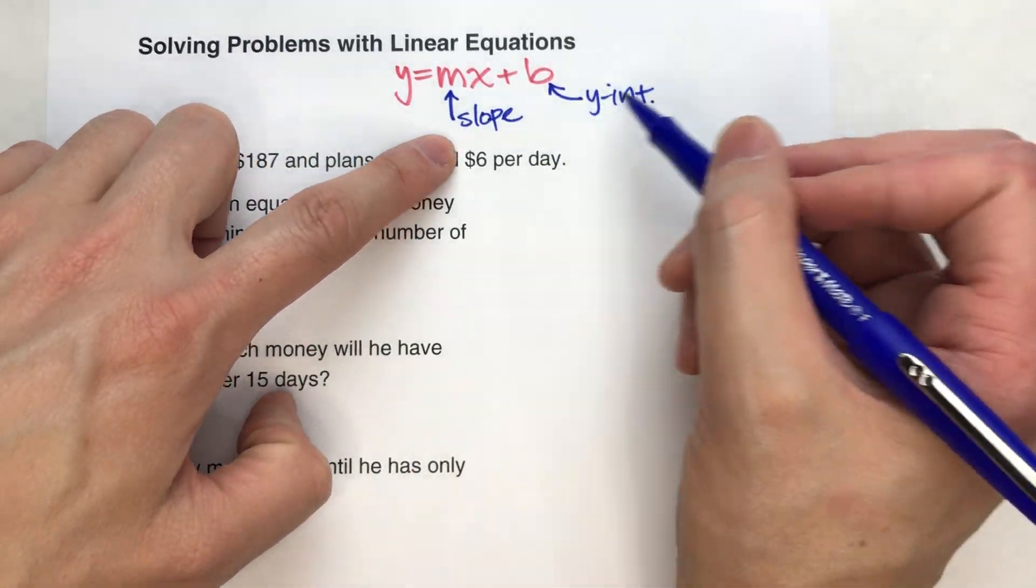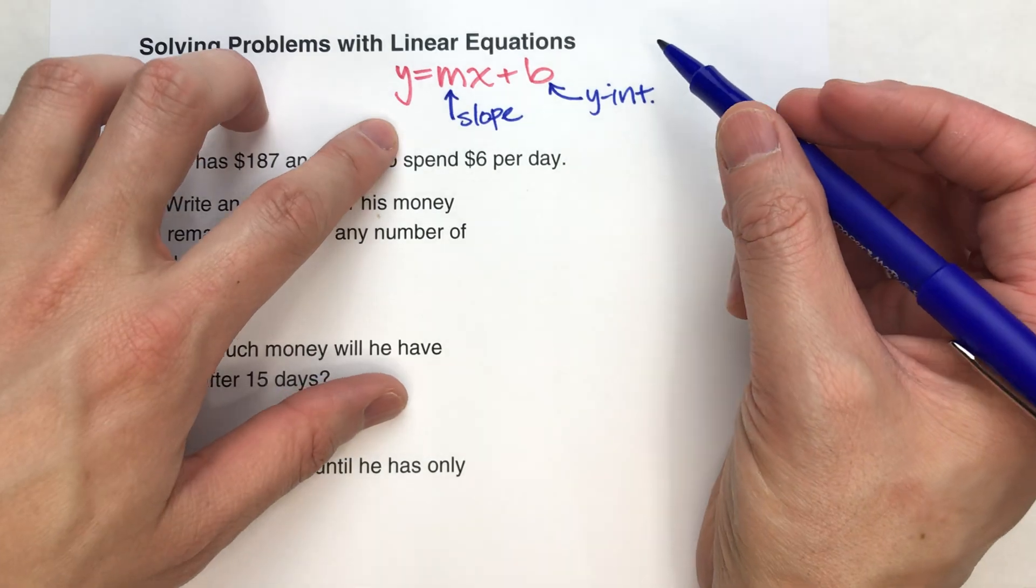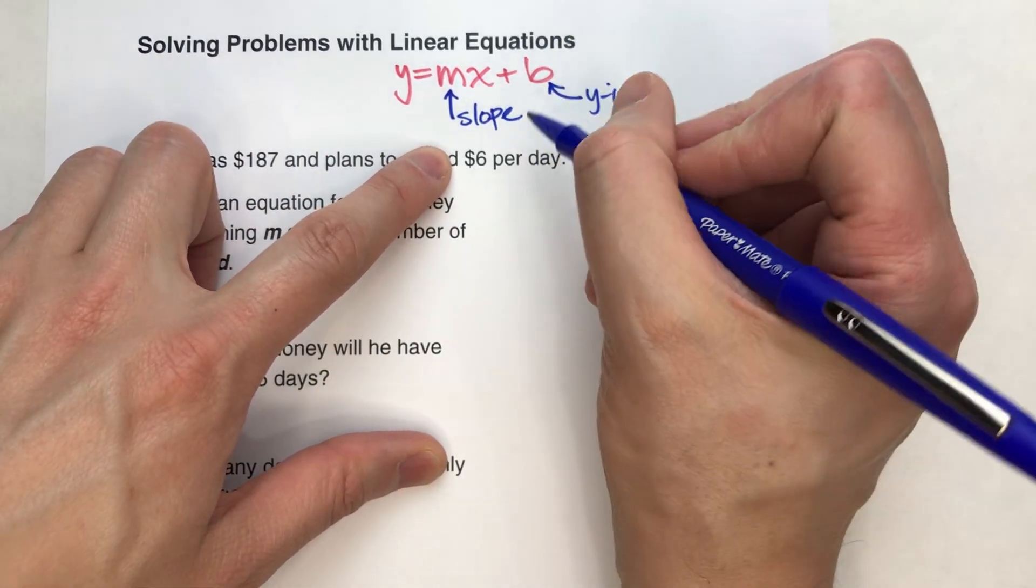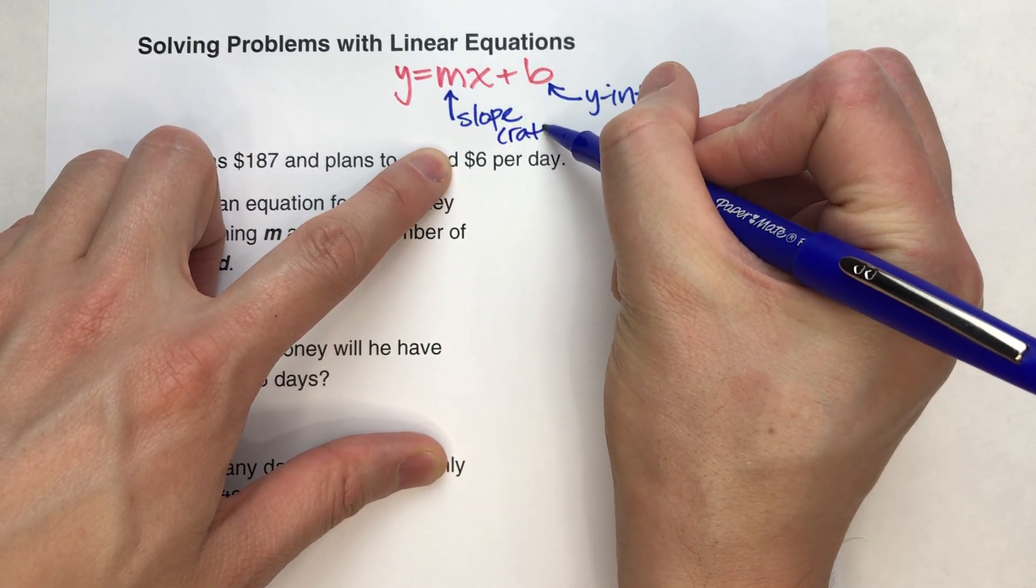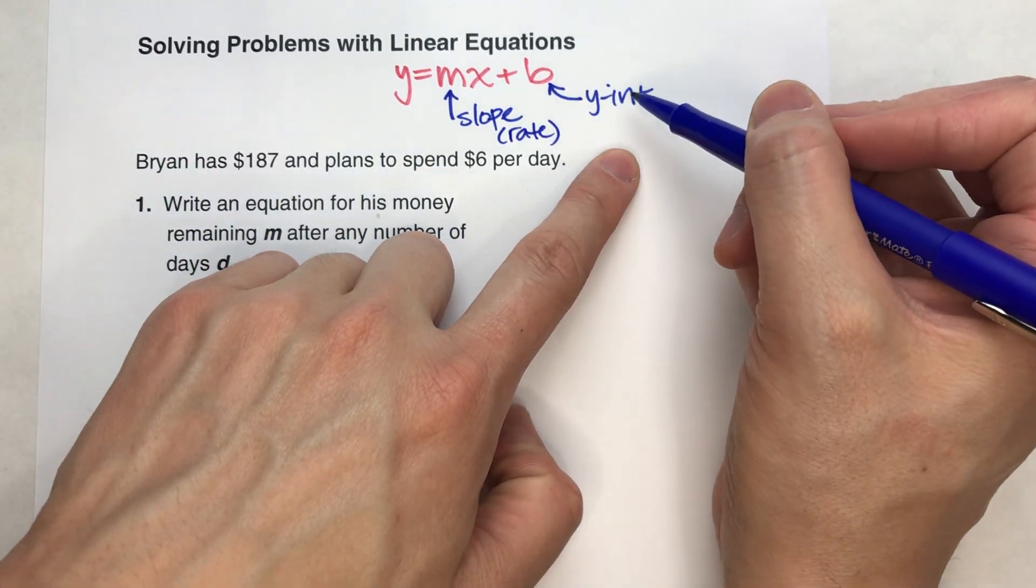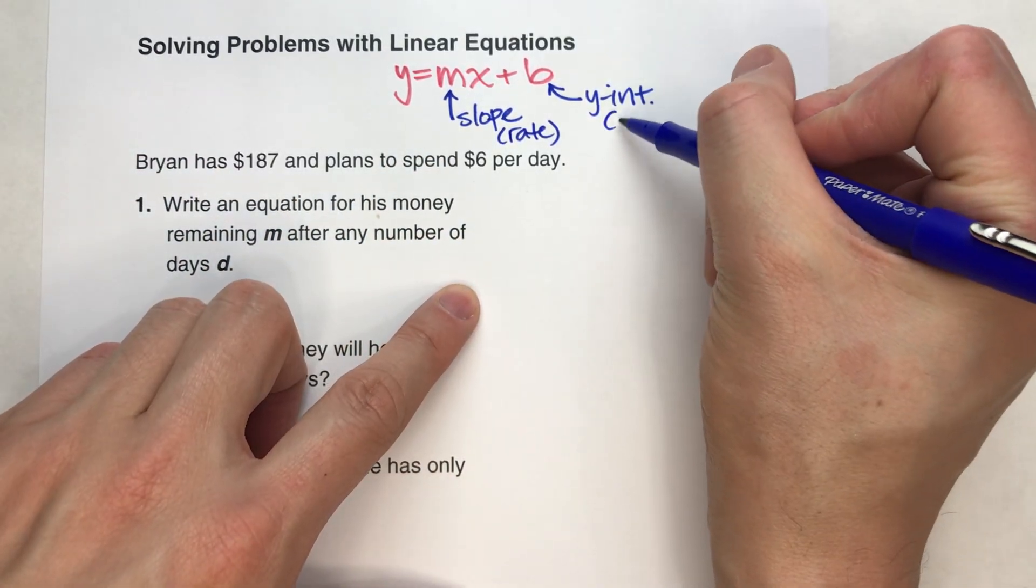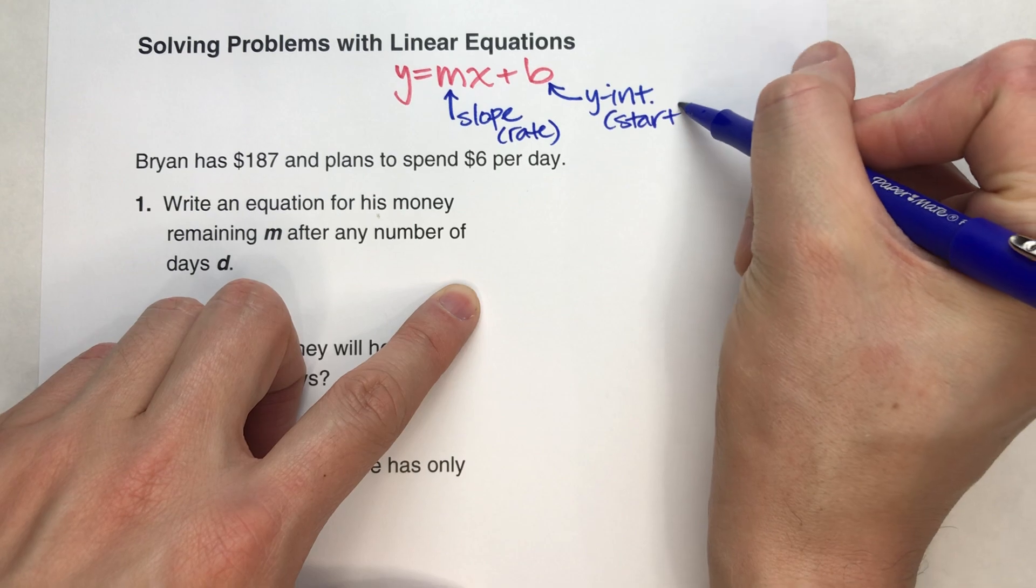And the b stands for the y-intercept. And those are the terms you use when you're graphing. However, when you deal with story problems, you can think of the slope as the rate.